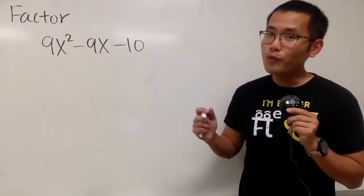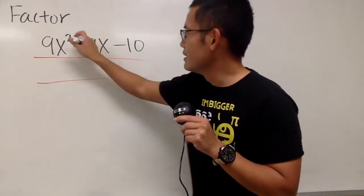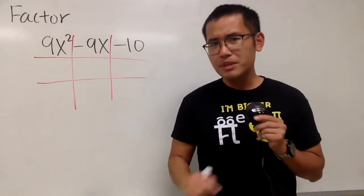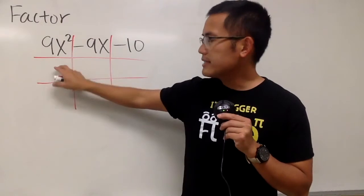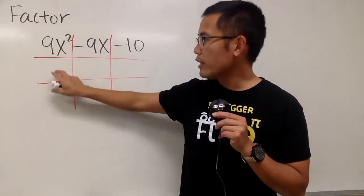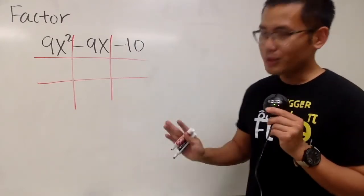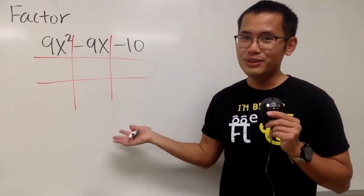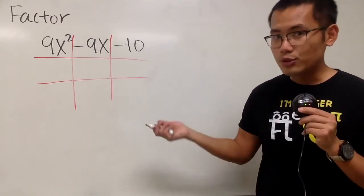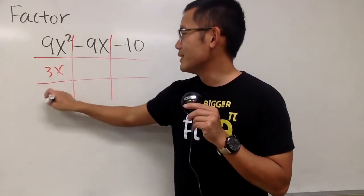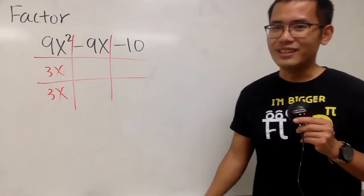Another trinomial that we have to factor. Of course, we use the tic-tac-toe method for this. This is trickier because here we have 9x squared. We can do x times 9x, or we can also do 3x times 3x. If your first choice doesn't work out, don't give up. The actual choice we are going to use is 3x times 3x — using x times 9x is not the correct choice.